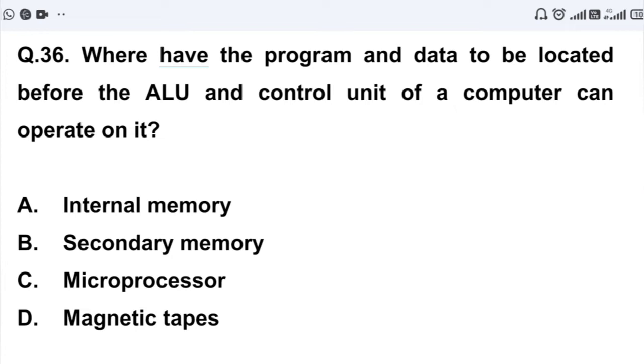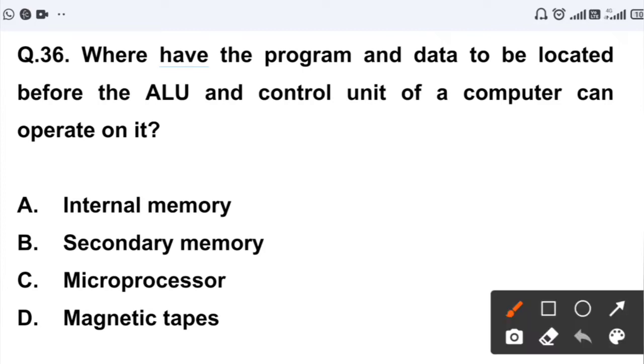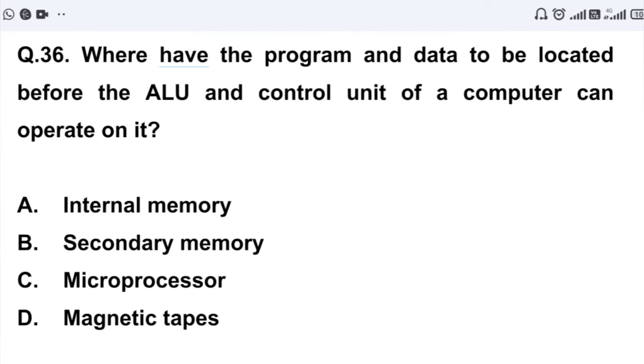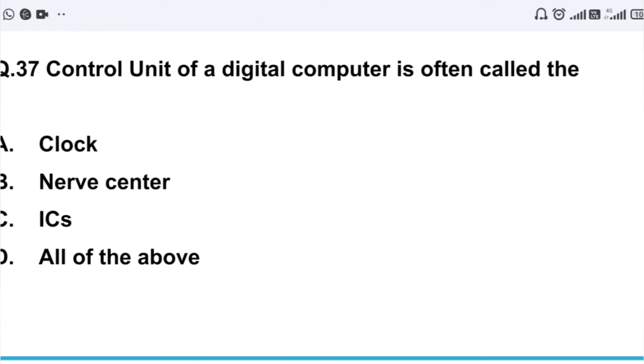Question number 36: Where have the program and data to be located before the ALU and control unit of a computer can operate on it? Option A: internal memory. Option B: secondary memory. Option C: microprocessor. Option D: magnetic tape. So when it operates in ALU or program or data, where is the data stored? So the data stored in internal memory. Option A, internal memory. Option A, internal memory.